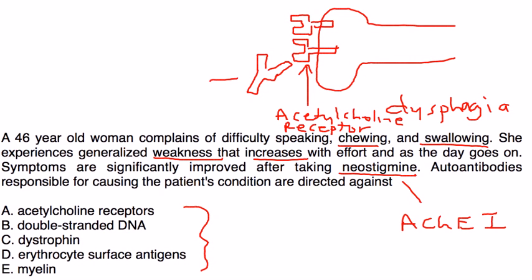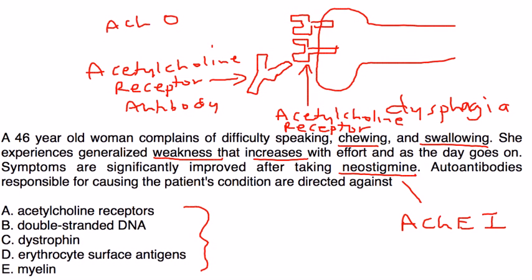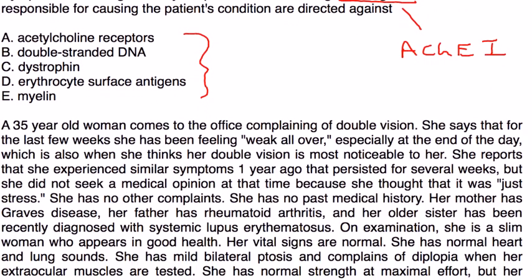And just so you know, that's the antibody. That's the acetylcholine receptor antibody that's blocking the acetylcholine from binding to the acetylcholine receptor. And finally, a big long one here.